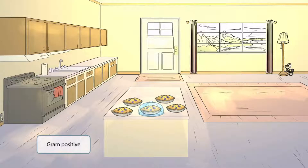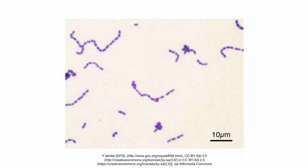Do you notice anything about the floor in this home? We've made the wood floor look purple to help you remember that this organism is gram-positive. This is a gram stain of Streptococci. Notice that the organism stains purple, which is why it's a gram-positive organism. Also notice that the bacteria are circular, or cocci-shaped, and that they form long continuous chains. This morphology is unique to Streptococci.